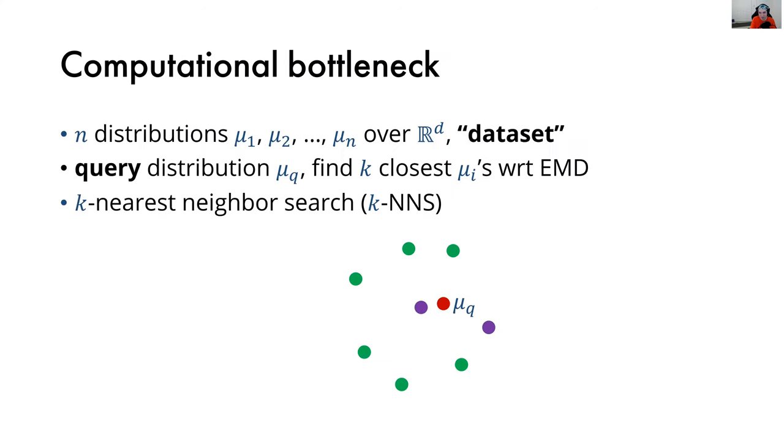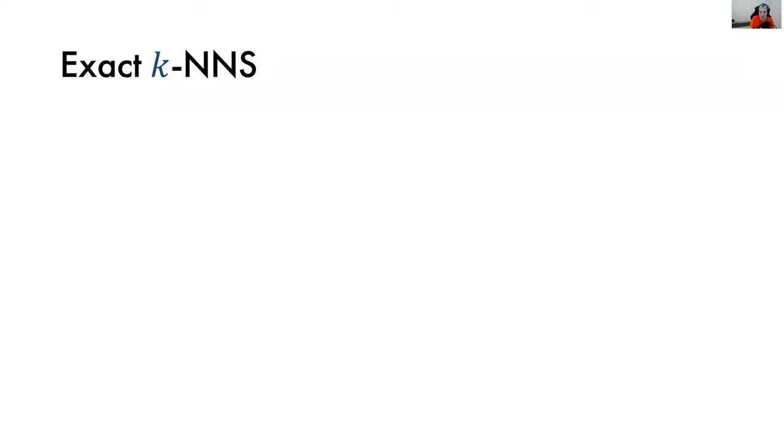How can we solve this? Starting with something naive: if we don't care about running time, we compute n distances and choose the k smallest ones. But just computing a single EMD is already a very interesting problem — unlike Euclidean distance, computing EMD is not a done deal and is still not fully closed.